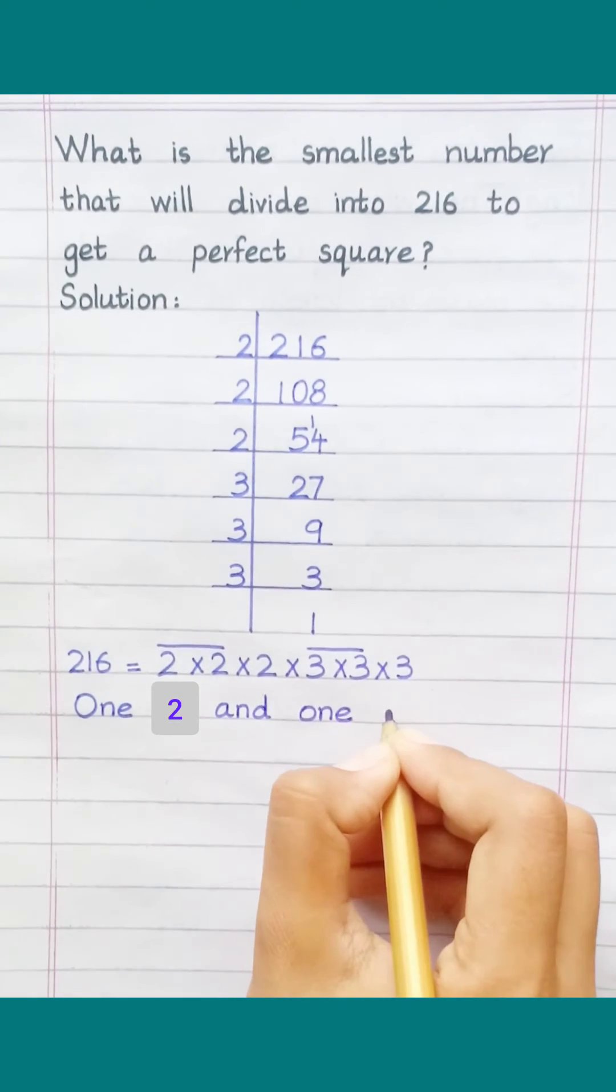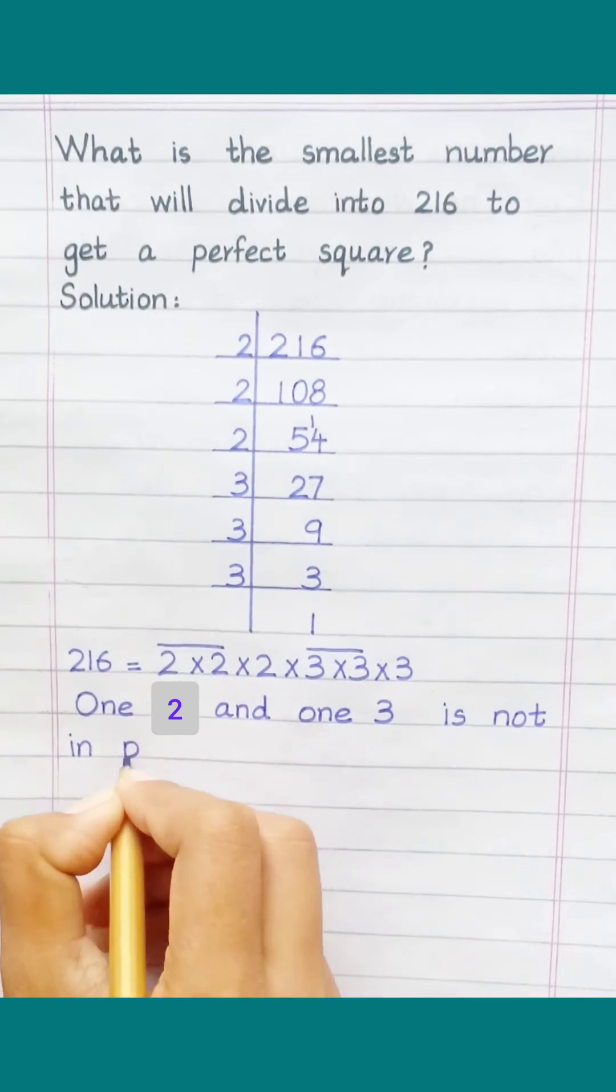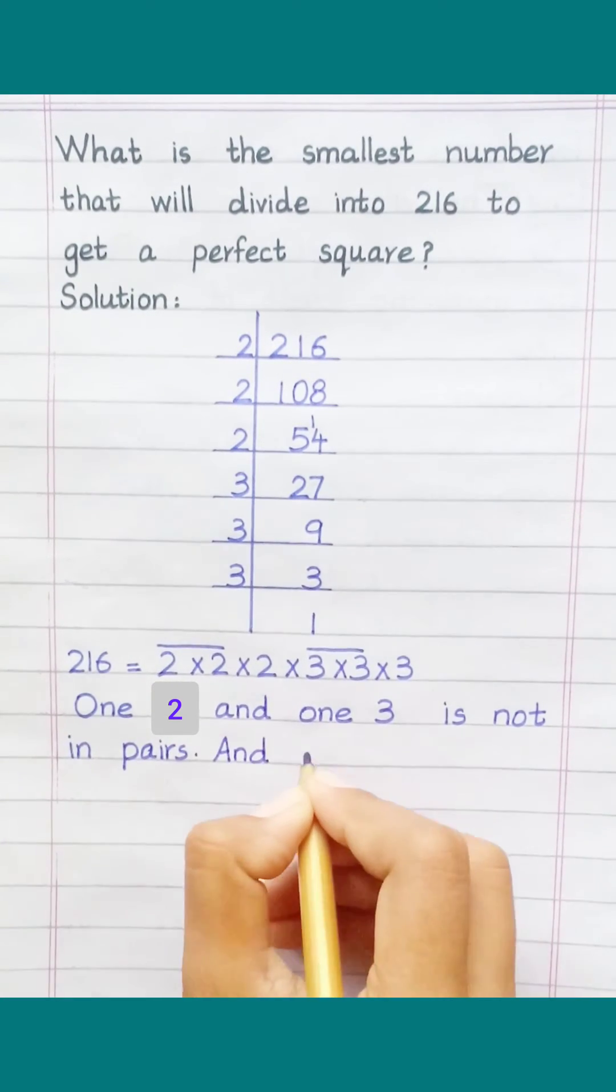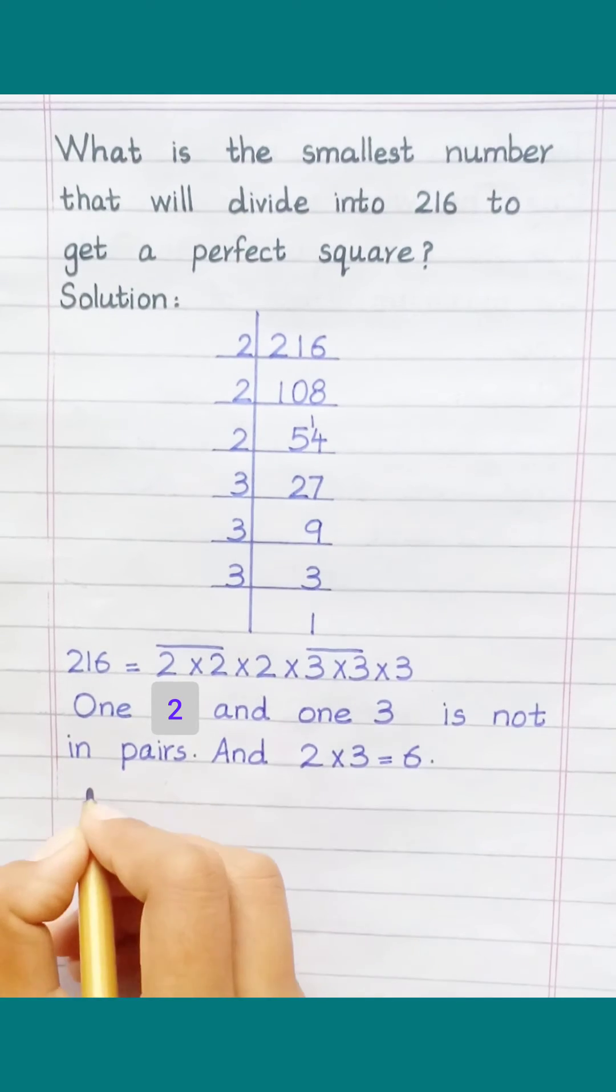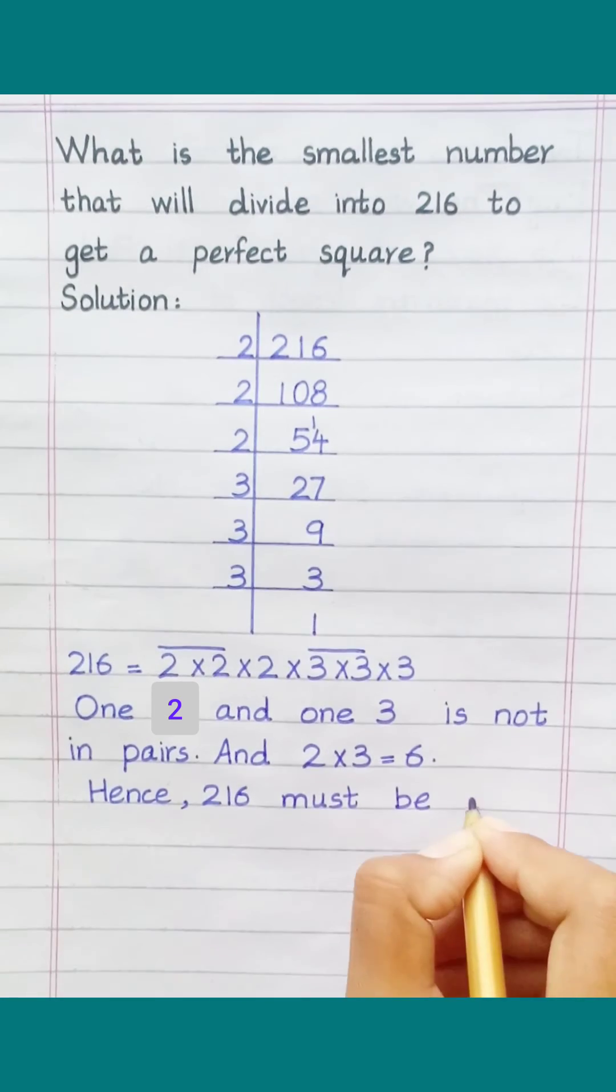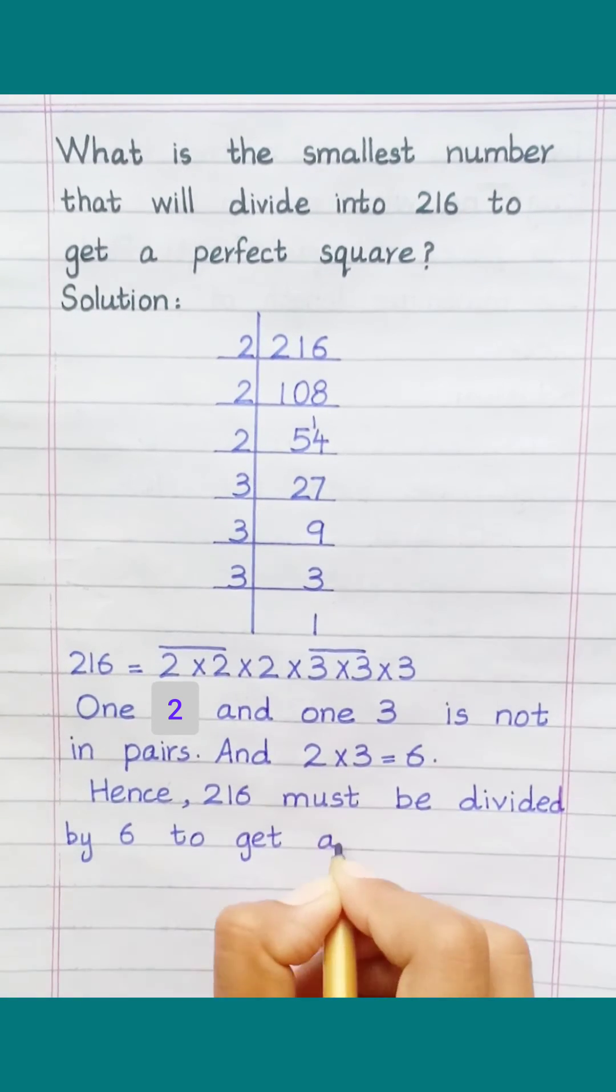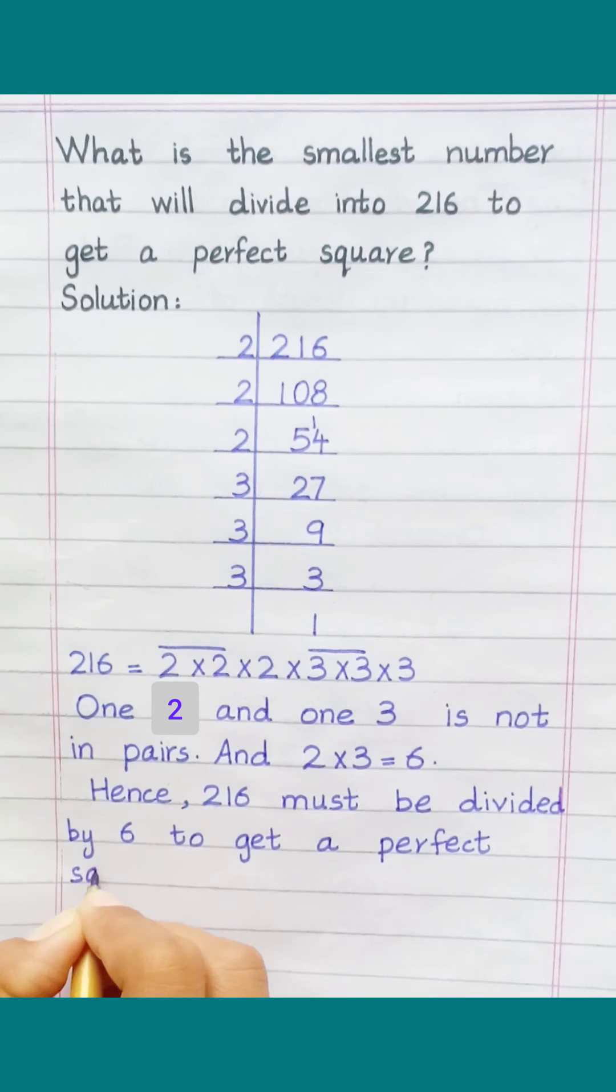One 2 and one 3 is not in pairs. And 2 times 3 is 6. Hence, 216 must be divided by 6 to get a perfect square.